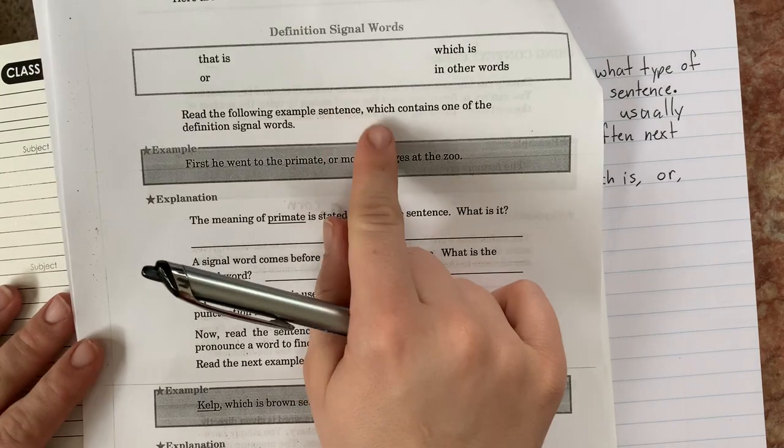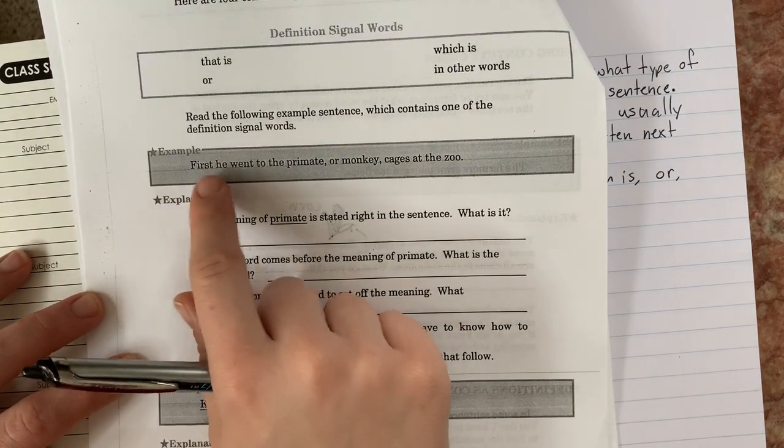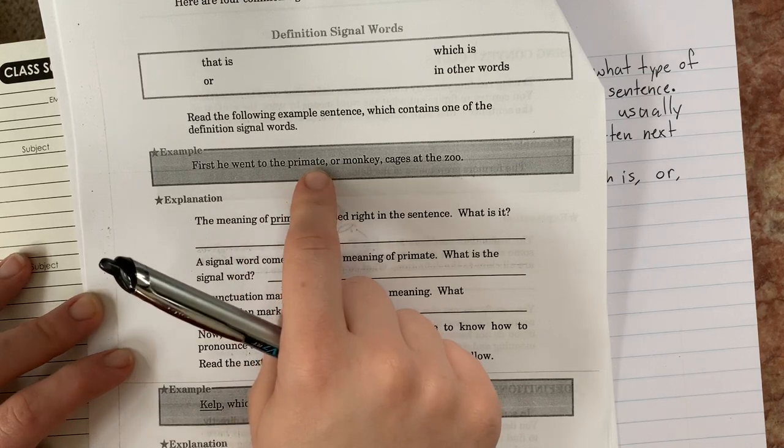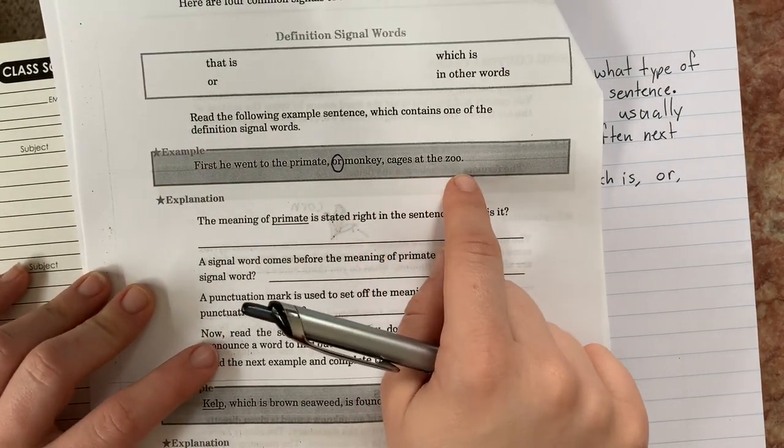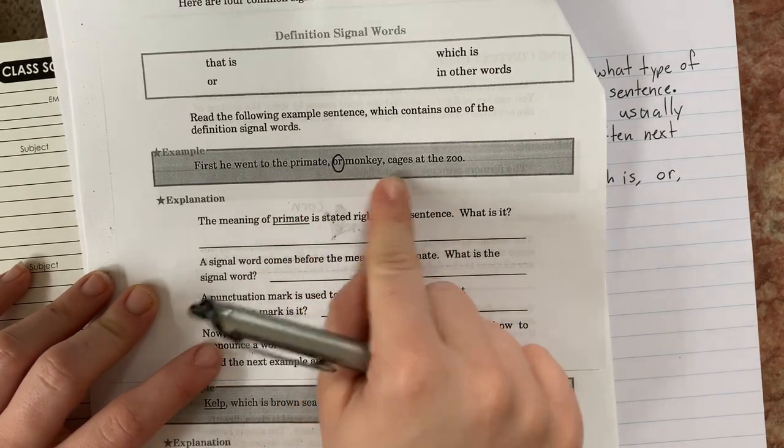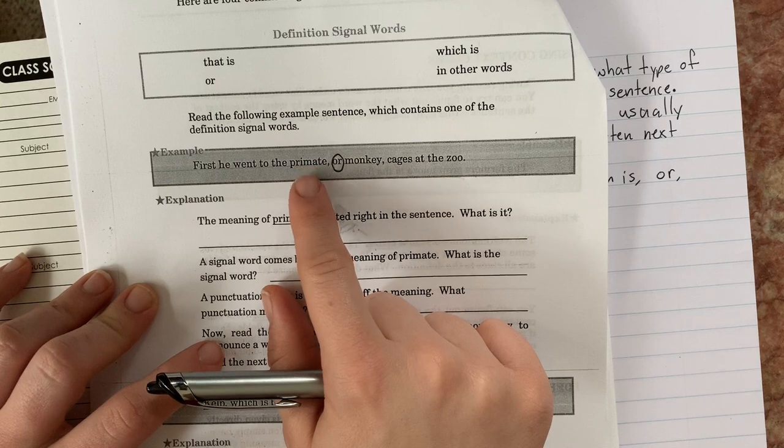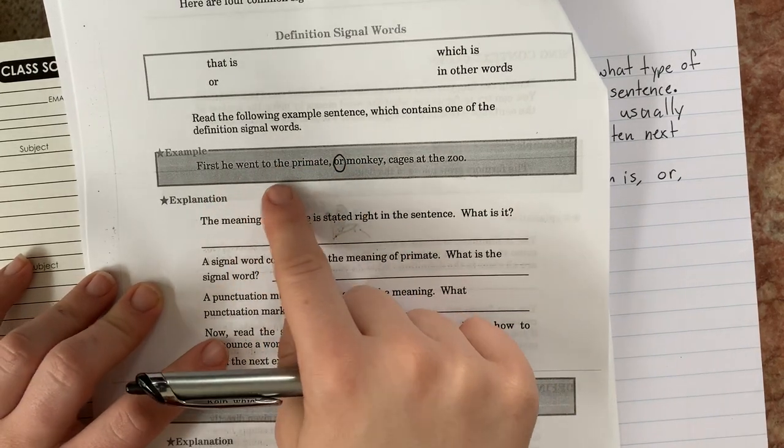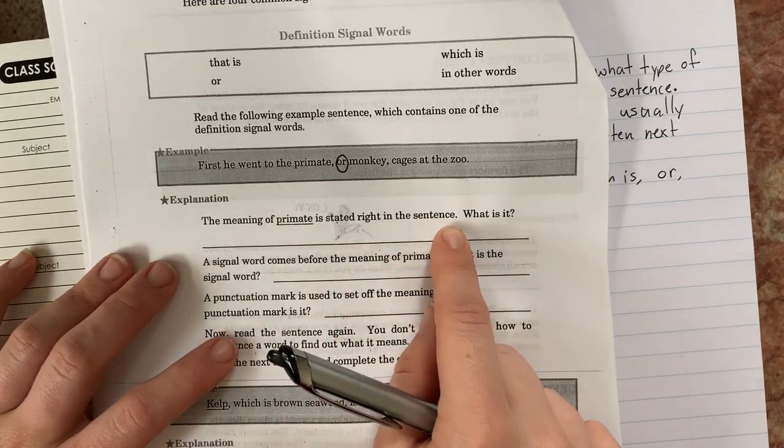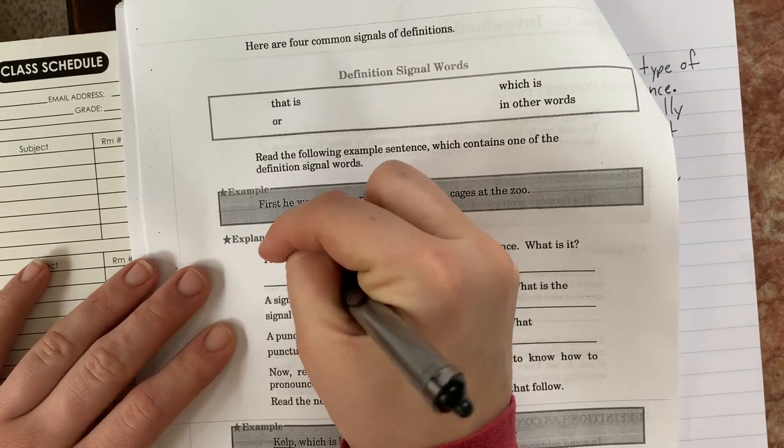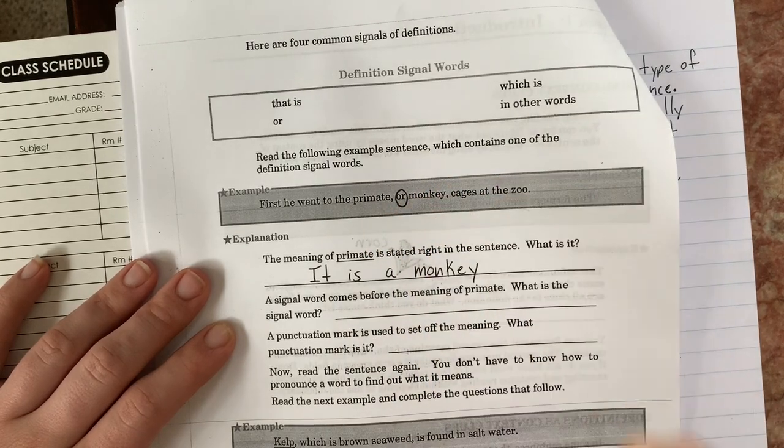So let's see. Read the following example sentence, which contains one of the definition signal words. Okay. First, he went to the primate or, ooh, or is one of them. Let me circle that. Or monkey cages at the zoo. So primate or monkey cages at the zoo. So primate, I'm going to guess here and I'm probably going to be right based off the context clues that primate means monkey. First, he went to the primate or monkey cages at the zoo. The meaning of primate is stated right in the sentence. What is it? Oh, I know what it is. It is a monkey. It is a monkey, period.